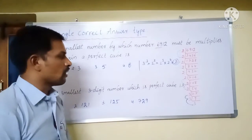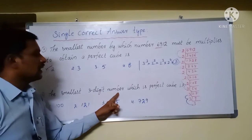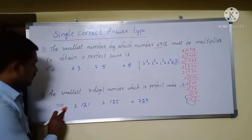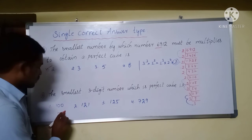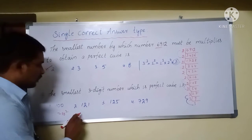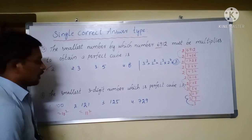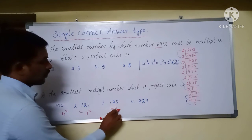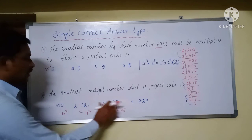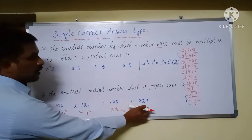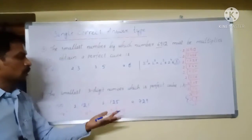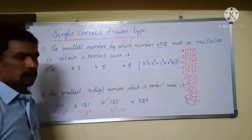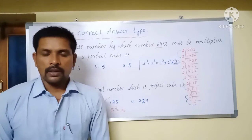The smallest 3-digit perfect cube: options include 100 (which is 10²), 121 (which is 11²) — neither are perfect cubes. But 125 = 5³, which is a perfect cube. Although 729 is also a perfect cube, 125 is the smallest. So option number 3, which is 125, is the correct answer.